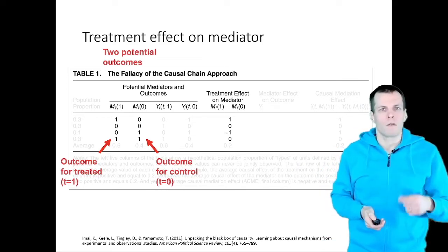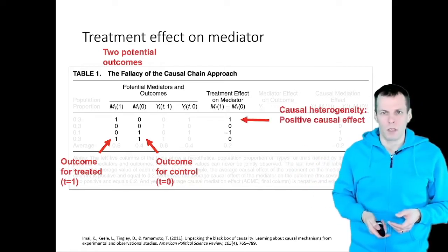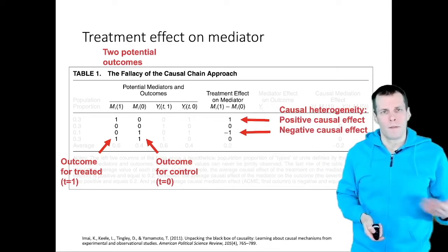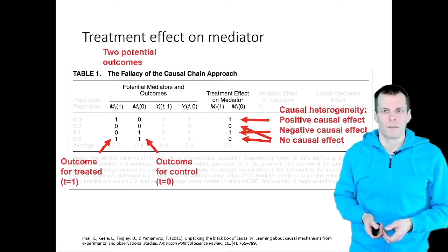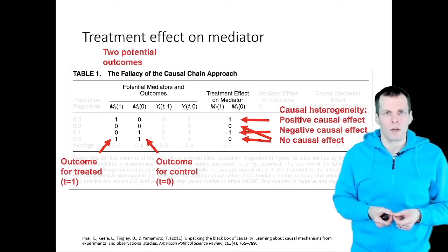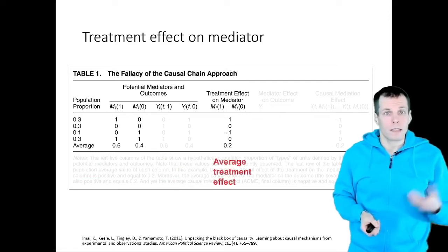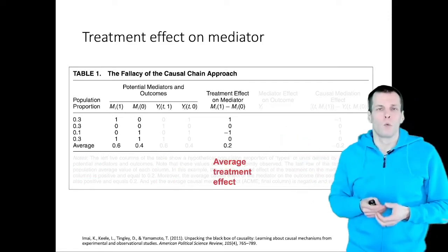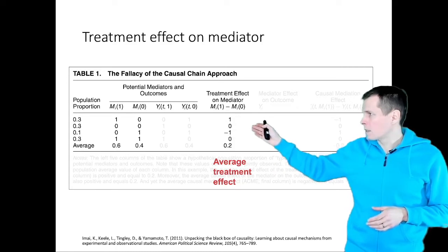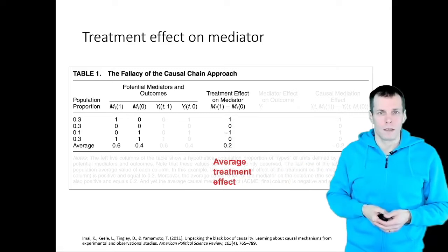We can see that we have causal heterogeneity here. For the first part of the population, the treatment effect is positive; for another part it is negative; and for the remaining two parts there is no causal effect. We normally can't estimate these individual causal effects. The best we can do is estimate the average treatment effect, which is the average of the individual effects weighted by the population fraction — 0.3 times 1 plus 0.1 times minus 1 equals 0.2.